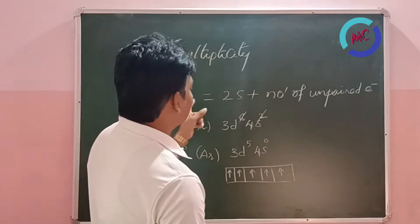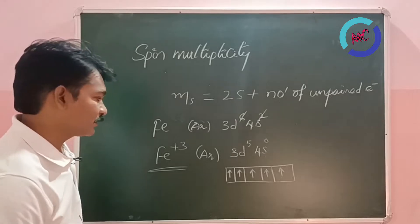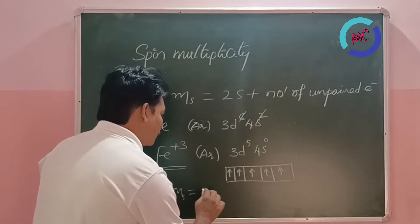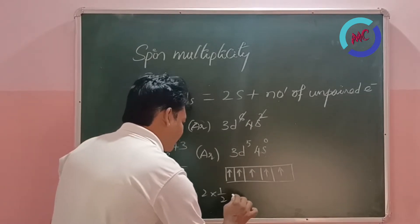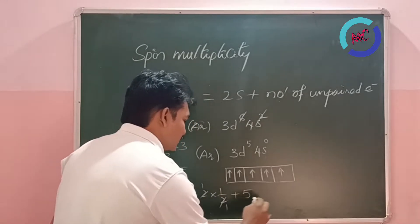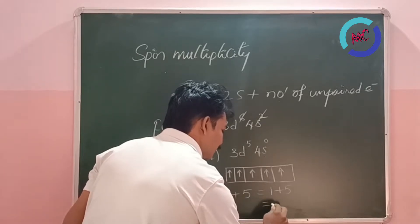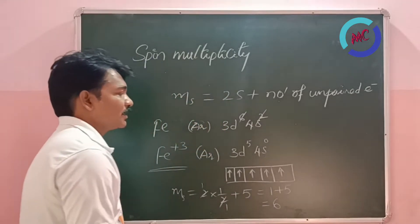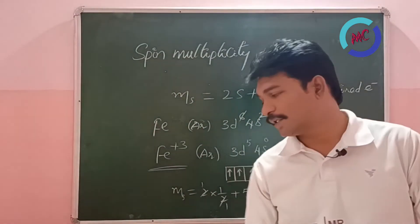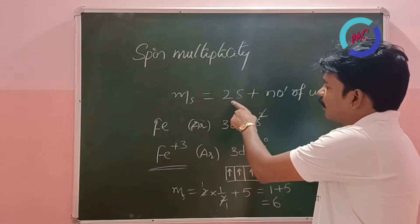Now applying the formula: spin multiplicity = 2S + number of unpaired electrons = 2 × (1/2) + 5 = 1 + 5 = 6. The spin multiplicity of ferric ion in its ground state is 6.